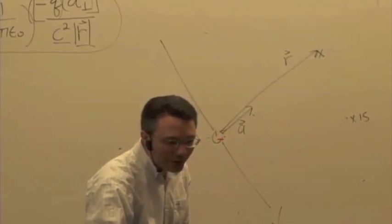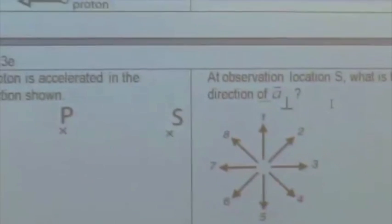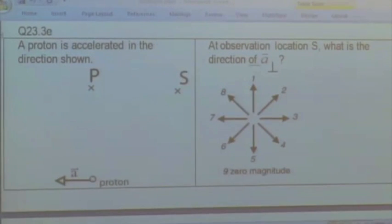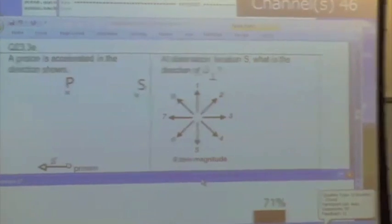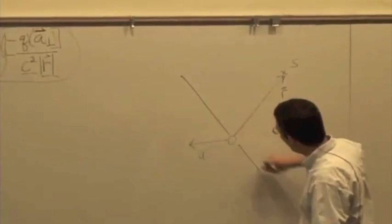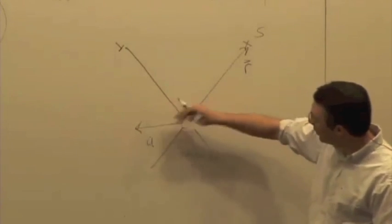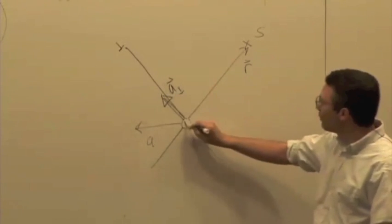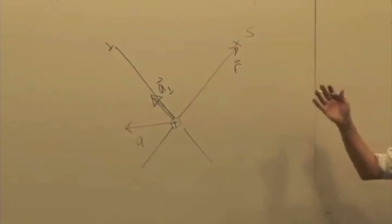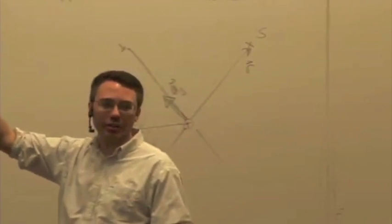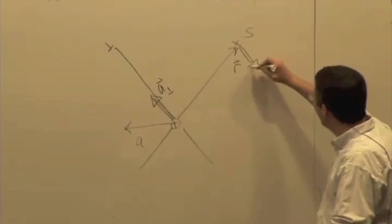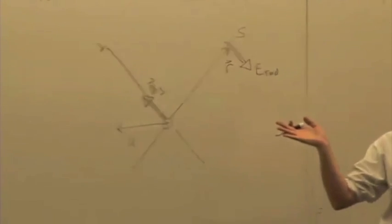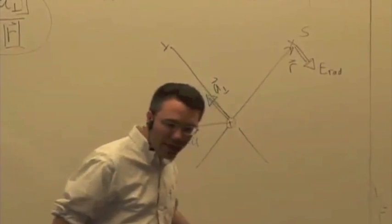Let's do one more before the quiz. Figure out the direction of a perpendicular at location S given this direction of acceleration. Answer A is correct: you draw the r vector pointing to S, the perpendicular axis is now perpendicular to that, and decomposing the acceleration vector gives a perpendicular in that direction. So if this is a proton, E radiative will be pointing in direction four — a negative times a positive gives E radiative opposite to a perpendicular. If it were an electron, it would be direction eight. Getting the direction is the trickiest part; once you have it, the magnitude is not so bad — we'll deal with that next time.